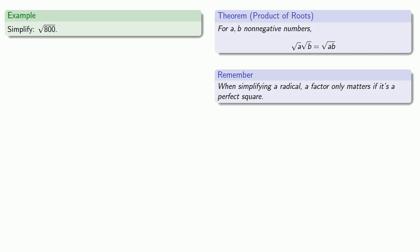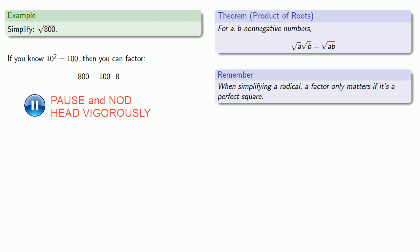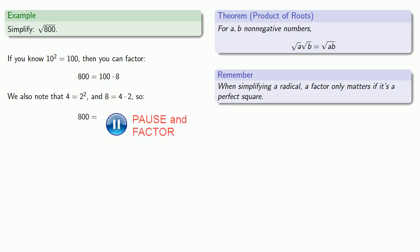So maybe, just maybe, you know that 10 squared is equal to 100. If you do, then you can factor 800 as 100 times 8. Now if we take a look at this 8, we also note that 4 is 2 squared, and we can factor 8 as 4 times 2, and so 800 will factor as 100 times 4 times 2.